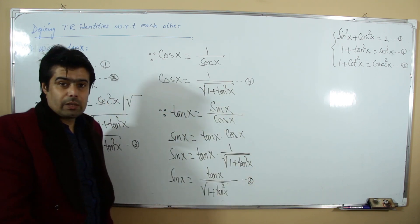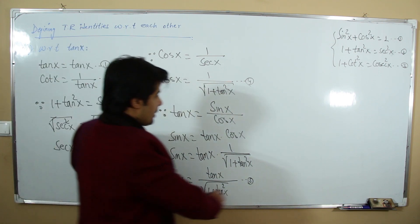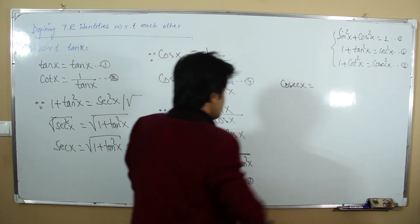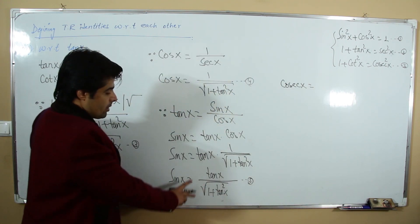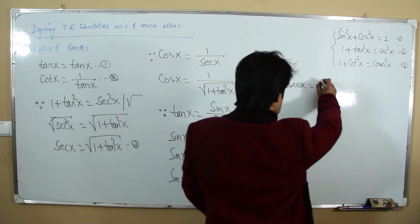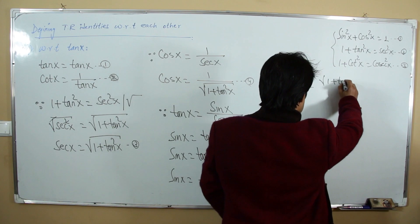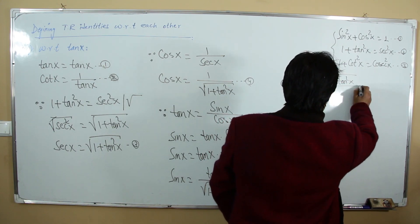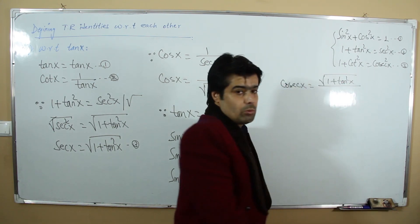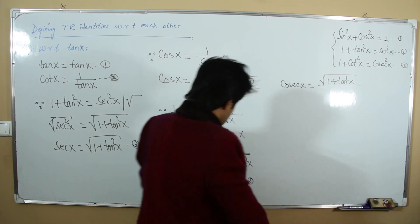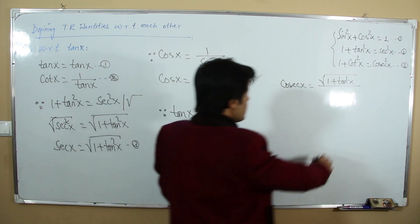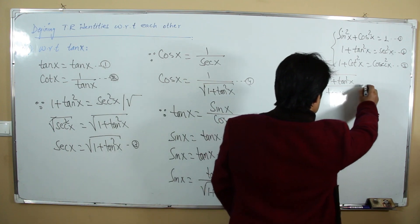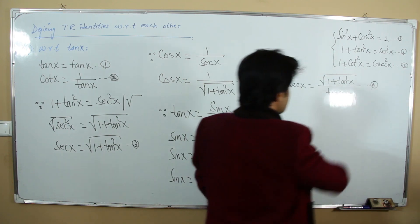Cosecant is the reciprocal of sine, so cosecant with respect to tangent is √(1 + tan²x) / tan x. This is our sixth relation.